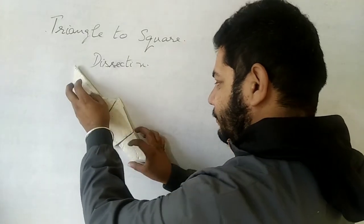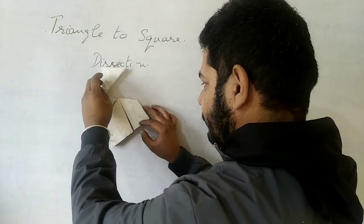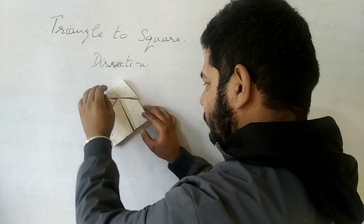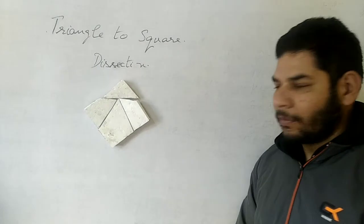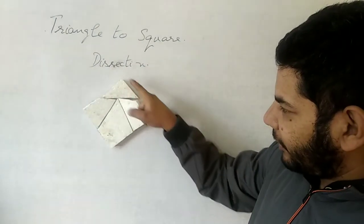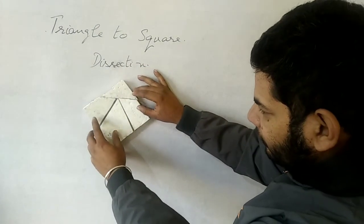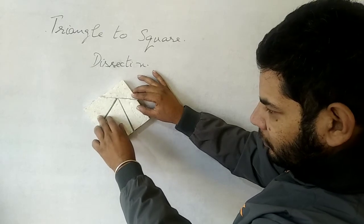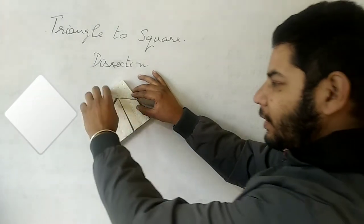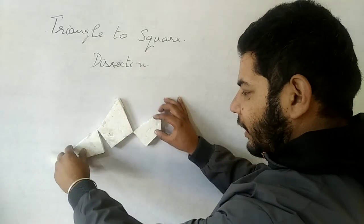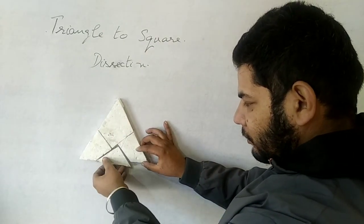So this becomes a square, and again it can be converted into a triangle.